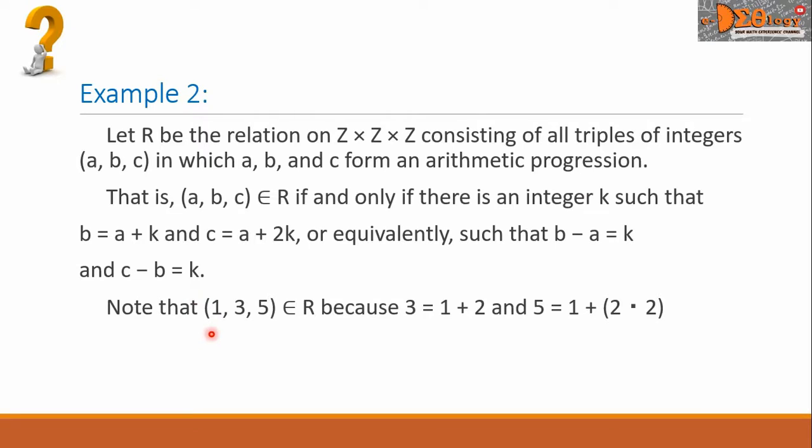Note that the element 1, 3, 5 is an element of the relation R, because 3 equals 1 plus 2 and 5 equals 1 plus the product 2 times 2.